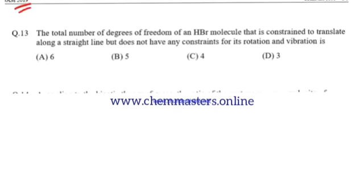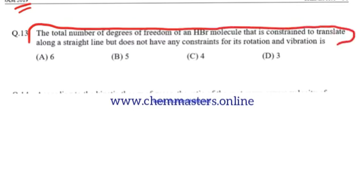The total number of degrees of freedom of an HBr molecule that is constrained to translate along a straight line but does not have any constraints for its rotation and vibration.